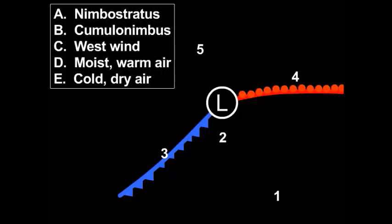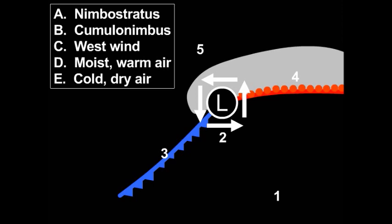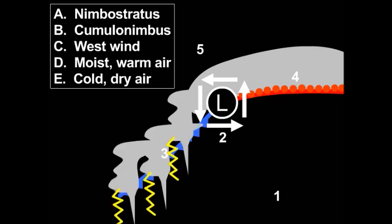Here's a pop quiz — your goal is to match the number with the letter. One matches with moist warm air; five matches with cold, dry air; two would be a west wind, and if two was on the north side of the low-pressure center, we would have an east wind. Four, in front of the warm front, would be associated with a nimbostratus cloud, and finally three would be a cumulonimbus cloud.